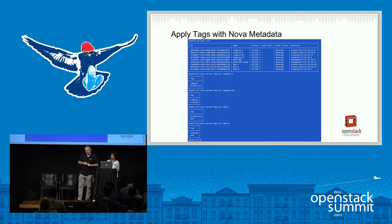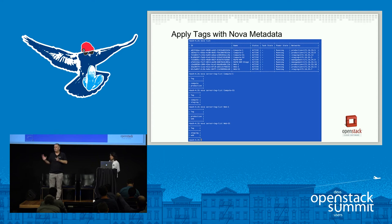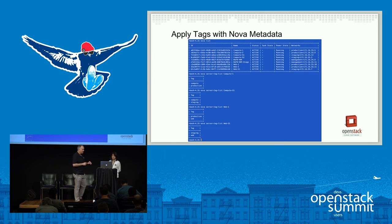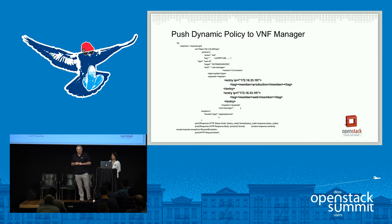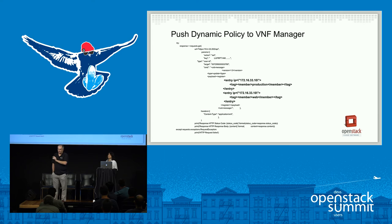So tags as metadata — this is just using Nova tagging. I've tagged all the VMs with simple tags: compute production, web production, web staging, compute staging. You can imagine having a much more complex taxonomy. There's also an API into the VNF manager that takes the instance of the app just created and the tags attached to it, and pushes that to the VNF manager — all done at runtime. This part of orchestration can be automated.